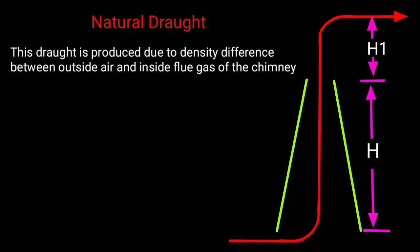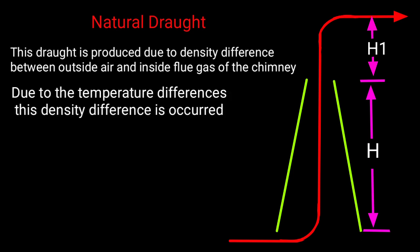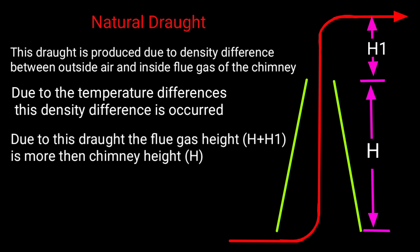Natural draught. This draught is produced due to density difference between outside air and inside flue gas of the chimney. Due to temperature differences, this density difference occurs. Due to this draught, the flue gas height H plus H1 is more than the chimney height H.